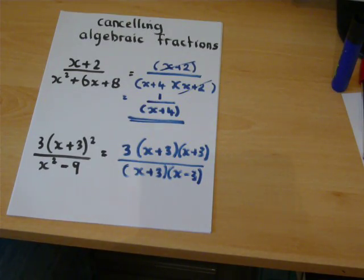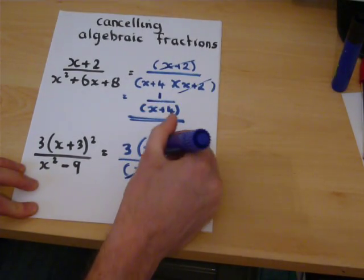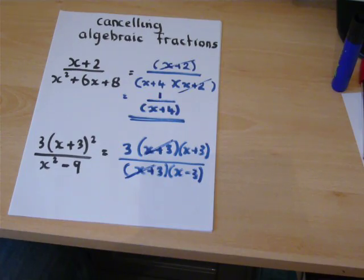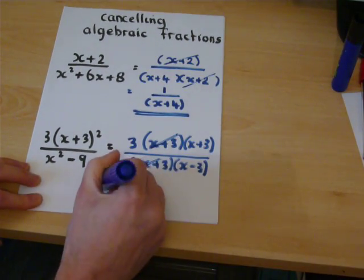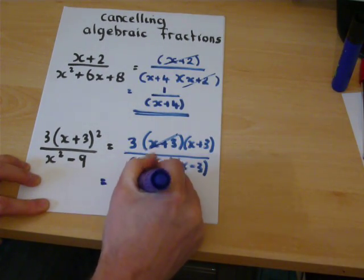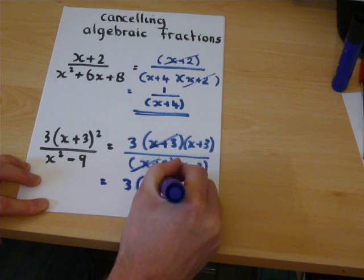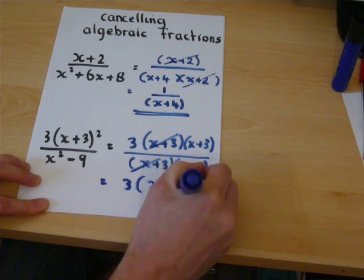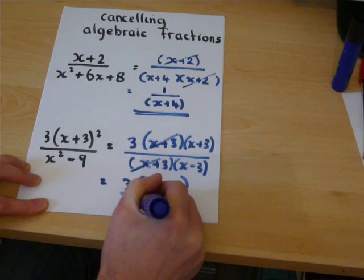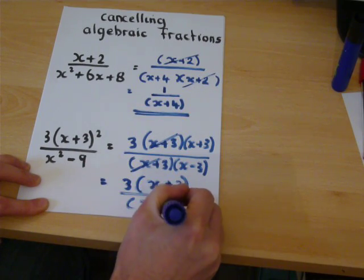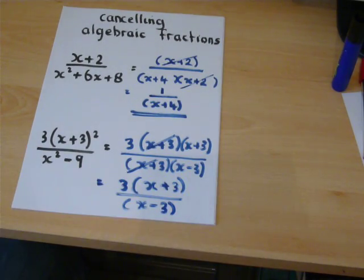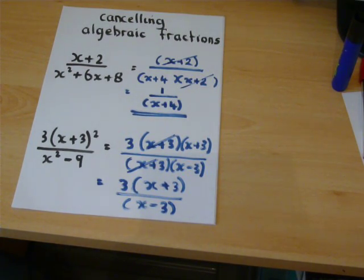We look for what cancels. And then we're left with three, x, add three, x minus three. And that is a simplified, cancel down fraction.